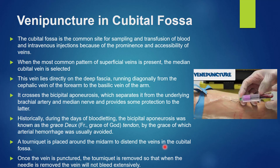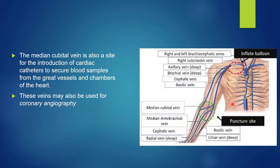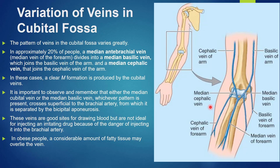A tourniquet is placed around the mid-arm to distend the veins in the cubital fossa; once the vein is punctured, the tourniquet is removed so the vein will not bleed extensively. The median cubital vein is also a site for introduction of cardiac catheters to secure blood samples from the great vessels and chambers of the heart, and may be used for coronary angiography.